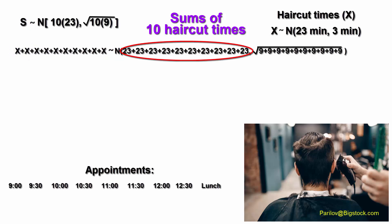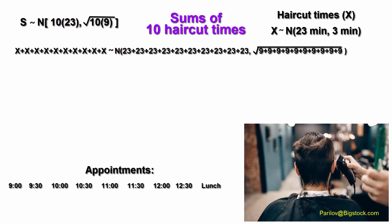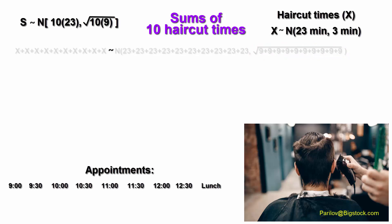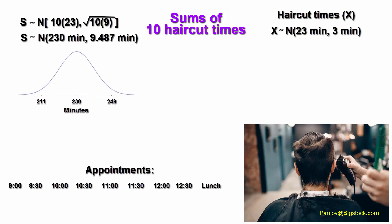Recall we add the means together 10 times, which is equivalent to multiplying the mean by 10. To get the standard deviation, we take the square root of the sum of the 10 variances. This is equivalent to taking the square root of 10 times 1 variance. Here, then, is the distribution of 10 times.